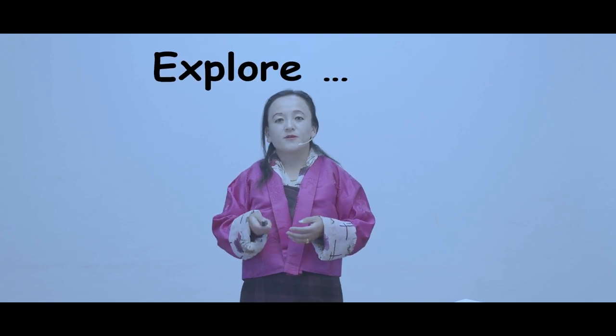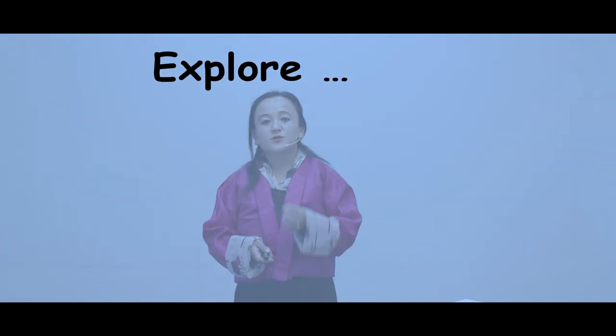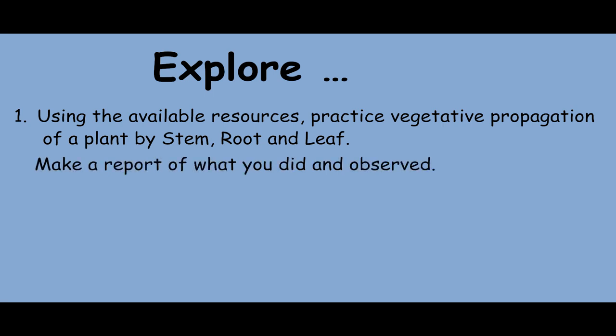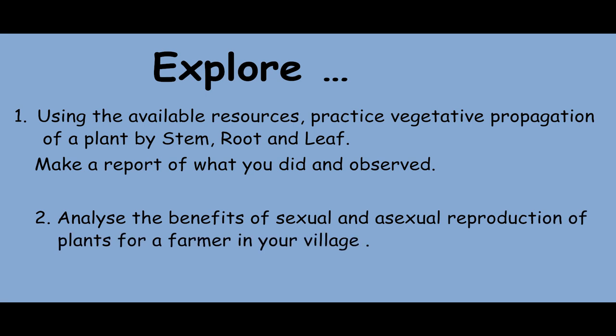Now let us do some activity. I want you to explore the following questions. First, using available resources, practice vegetative propagation of a plant by stem, roots, and leaf — then make a report of what you did and what you observed. Next, analyze the benefits of sexual and asexual reproduction of plants for farmers in your village.